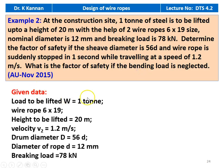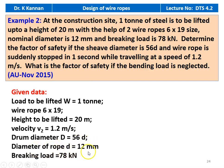We write down the given data: load to be lifted W equal to 1 ton, wire rope 6 by 19 cross section, height to be lifted 20 meter, velocity V equal to 1.2 meters per second, drum diameter is 56 times the rope diameter, rope diameter D equal to 12 millimeter, and the breaking load is 78 kilonewton.